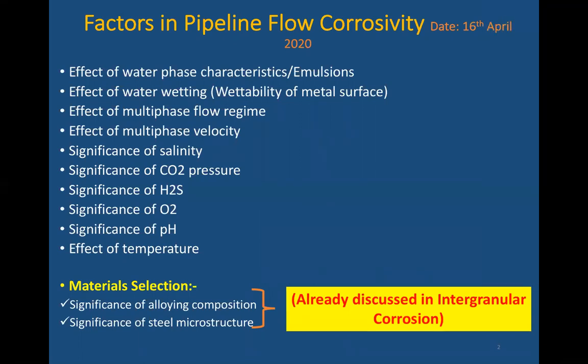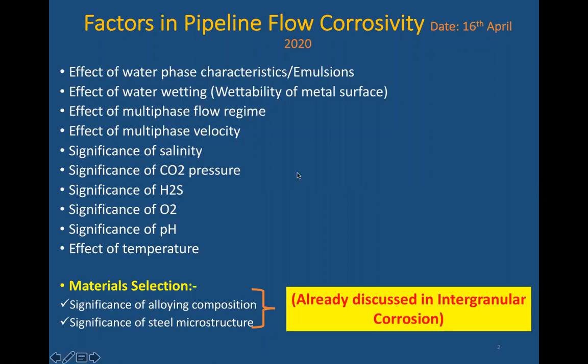Significance of CO₂ pressure: there is some CO₂ corrosion happening, so we'll see that during the flow time if CO₂ or CO₂ mixed with crude oil is going through the pipeline, what kind of corrosion may happen. H₂S: we know that sometimes sour gases are produced during production of crude oil, so if H₂S is present, what type of corrosion may happen will be discussed. Significance of dissolved O₂: if there is dissolved oxygen present, different types of corrosion may happen. Significance of pH: based on the pH, what type of corrosion will happen. Also, temperature: we already discussed high-temperature corrosion in the case of hydrogen damage, but here we'll also see the effect of temperature on corrosion.